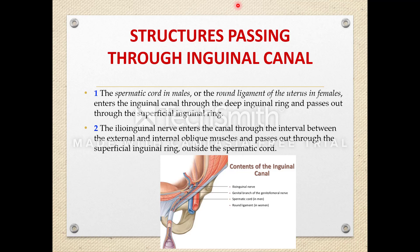Structures passing through the inguinal canal: number one, the spermatic cord in males and the round ligament of the uterus in females — they enter through the deep inguinal ring and exit through the superficial inguinal ring. Number two, the ilioinguinal nerve (L1) — it enters through the interval between the external and internal oblique muscles and exits through the superficial inguinal ring, outside the spermatic cord. Number three, the genital branch of the genitofemoral nerve also passes through.